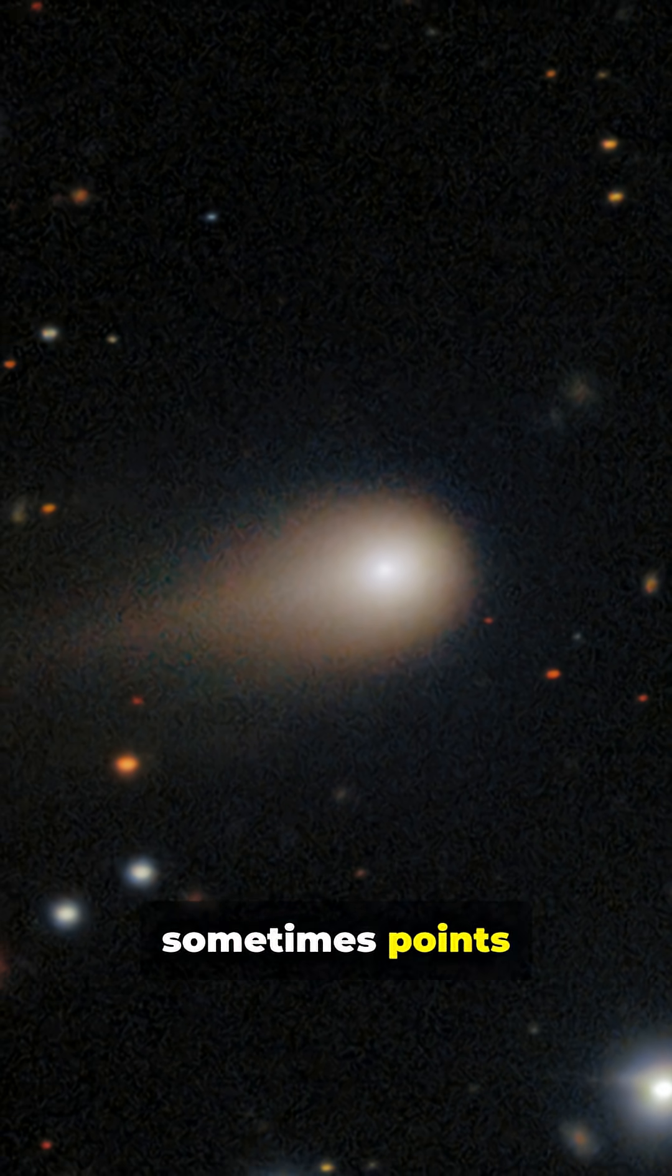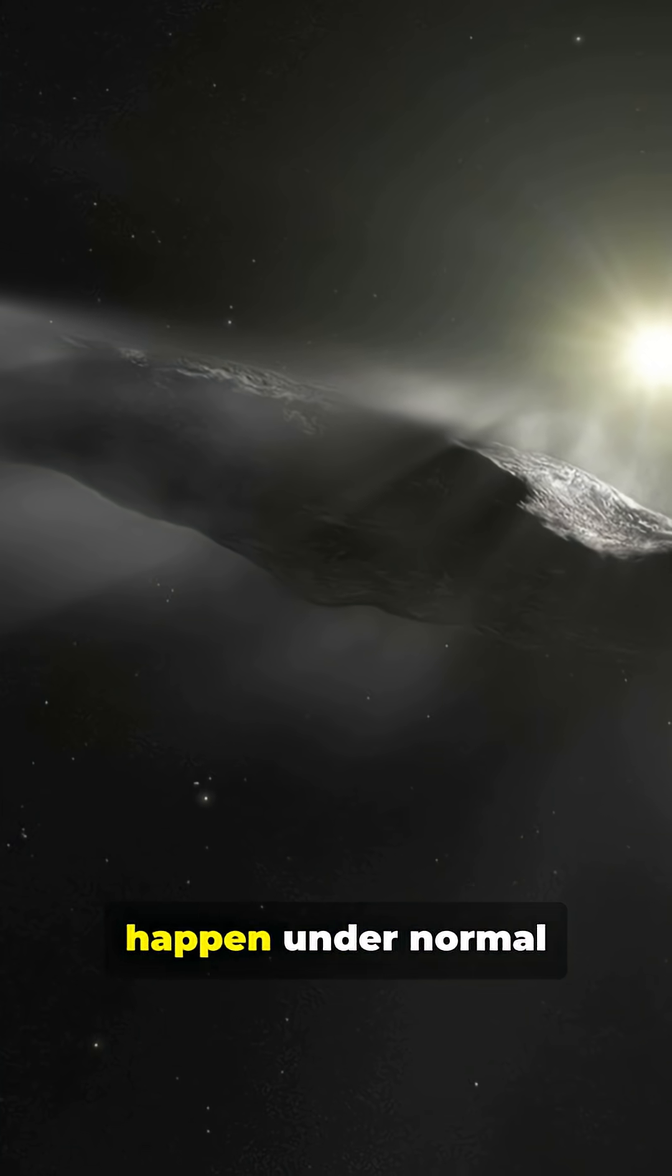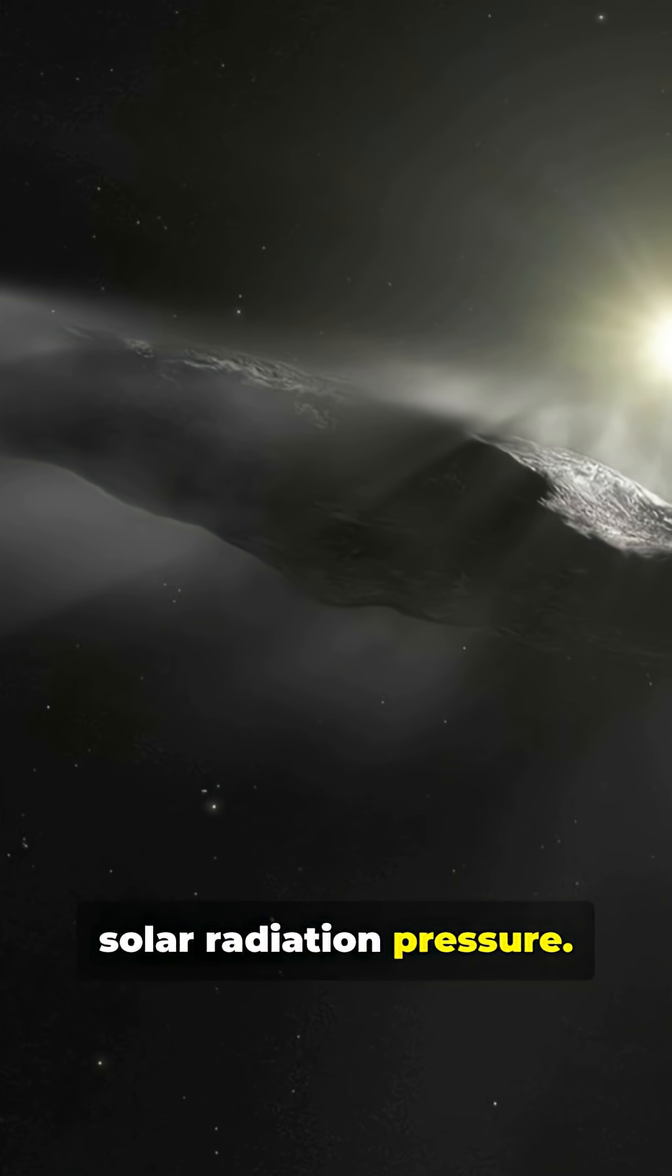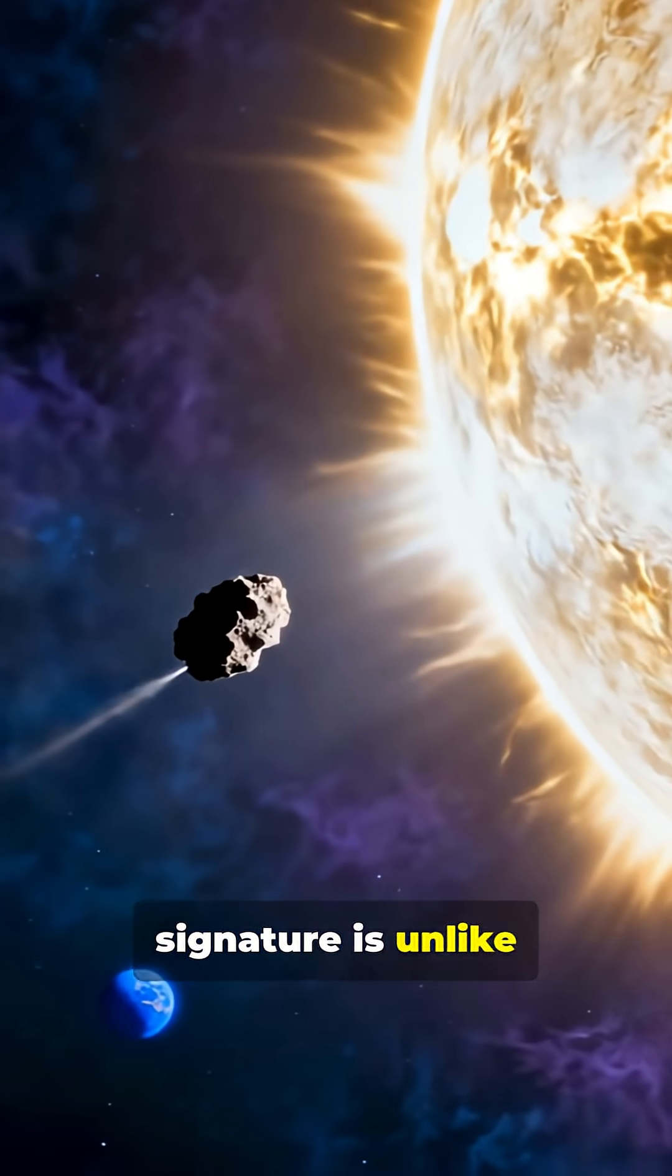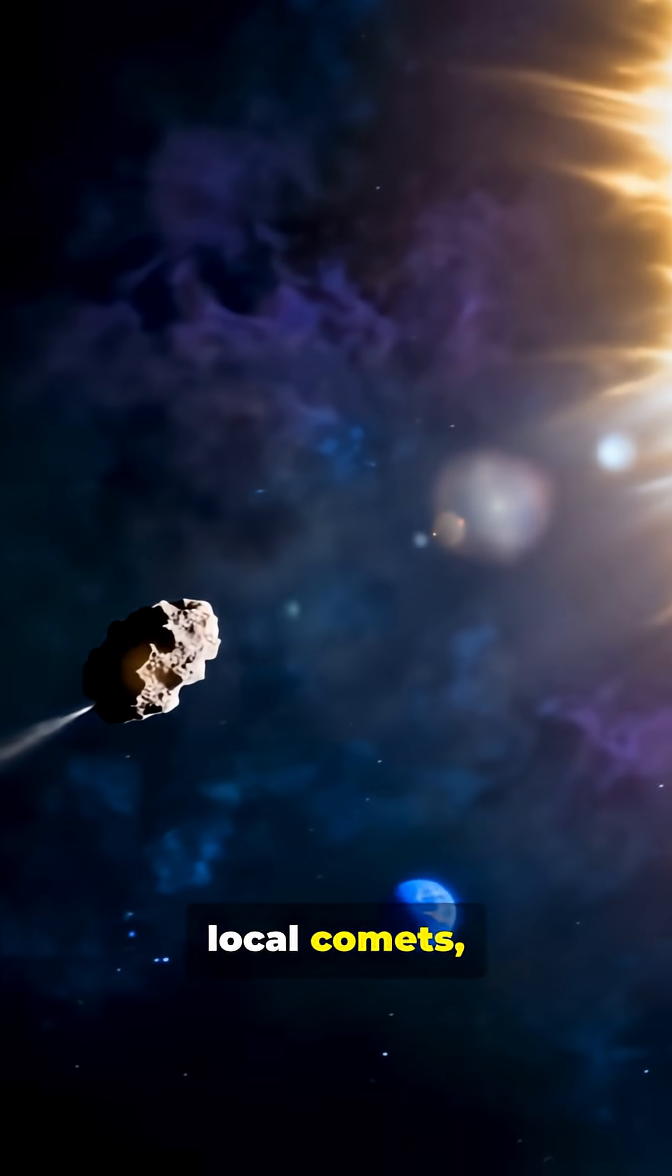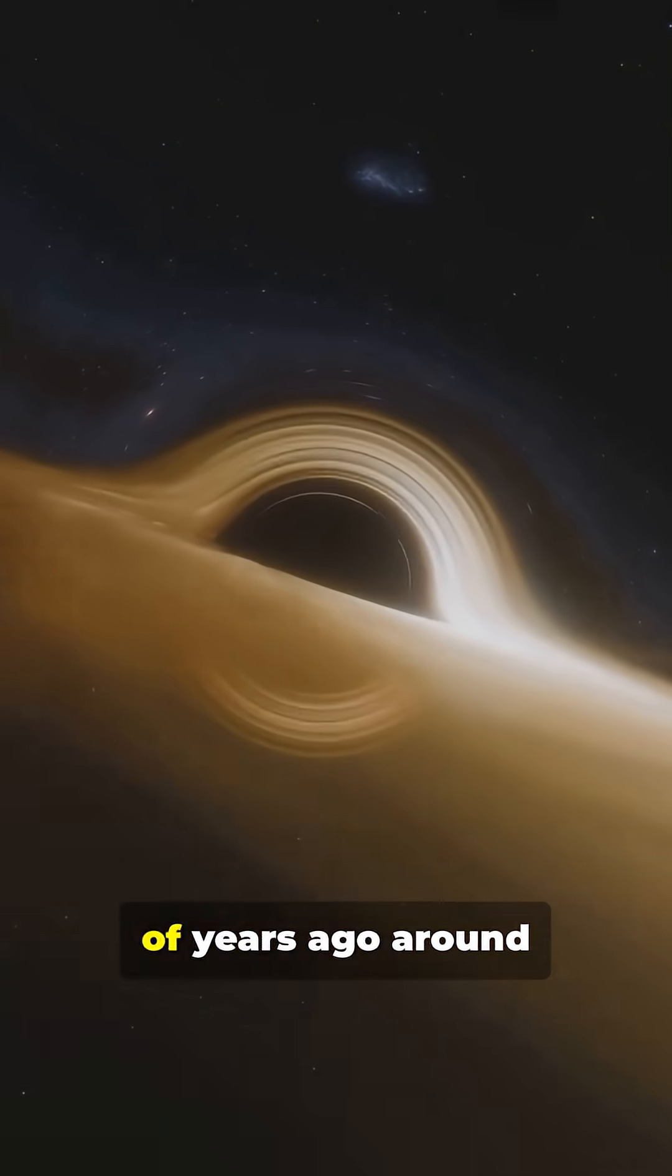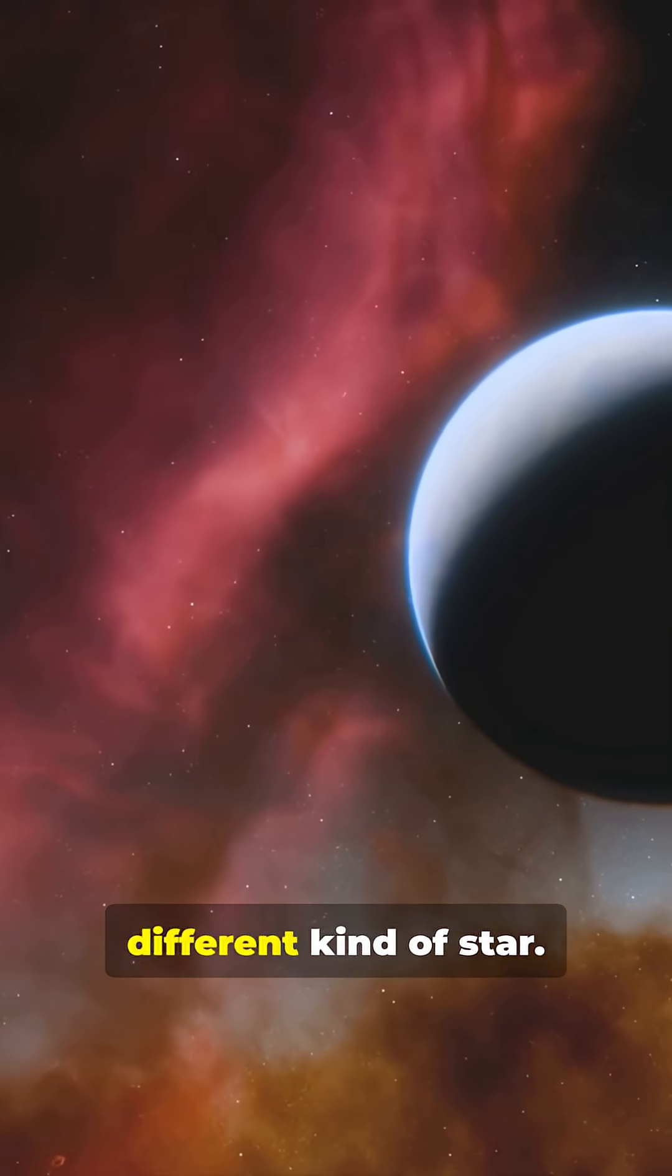Even its tail sometimes points toward the sun, which shouldn't happen under normal solar radiation pressure. And its chemical signature is unlike anything seen in local comets, suggesting it may have formed billions of years ago around a completely different kind of star.